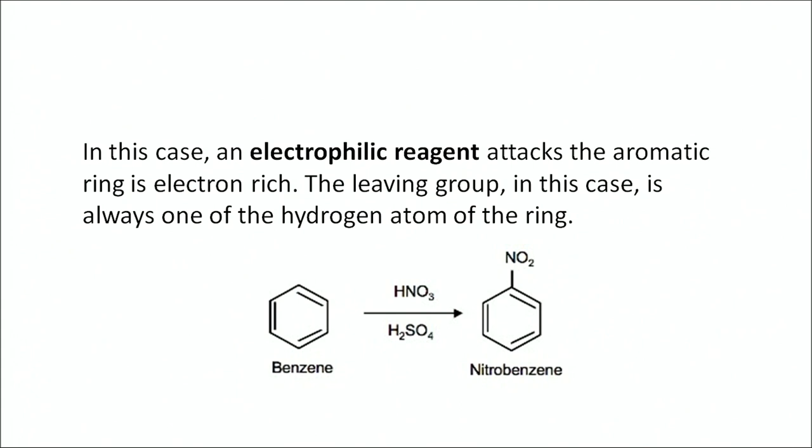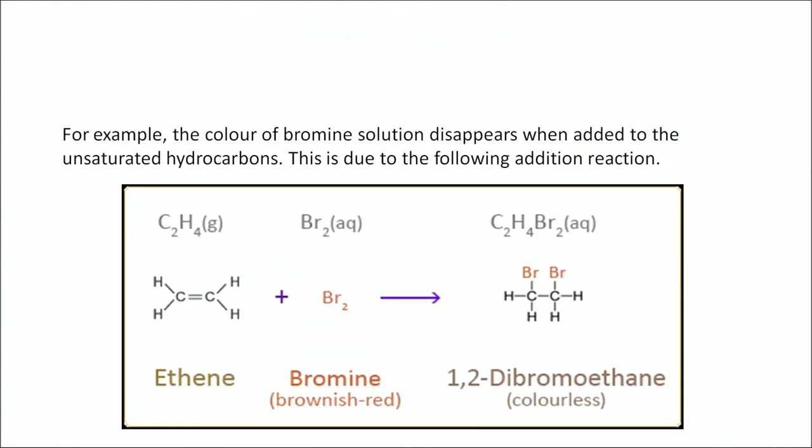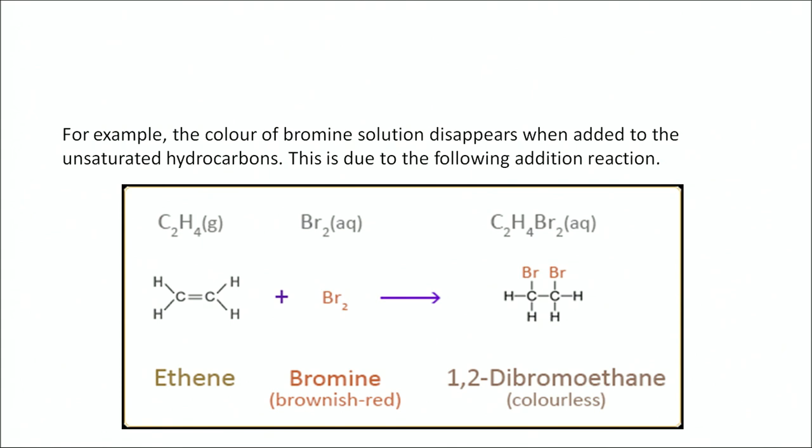Next is addition reaction, which generally takes place in unsaturated hydrocarbons such as alkenes and alkynes, which are extremely reactive towards a wide variety of reagents. The double bond is broken and the compound is added to it. For example, ethene is taken and bromine is added to it — the double bond is broken and the Br₂ molecule is completely added. This is called an addition reaction.